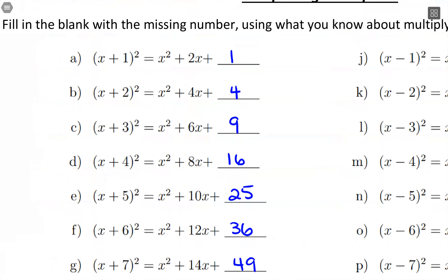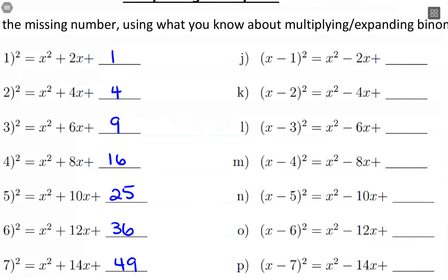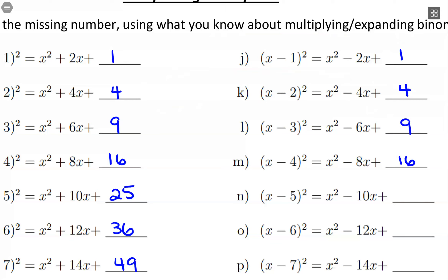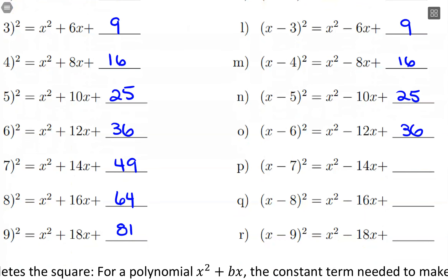These cases were binomials inside the parentheses that had addition between the two numbers. So let's see what happens when we have subtraction between the two numbers. What we would have at the end is technically that negative 1 squared, so we get positive 1. Similarly, negative 2 in parentheses squared gives us positive 4. So the numbers are the same — we're getting these same positive squares out at the end. So 9, 16, 25, 36, 49, 64, and 81.